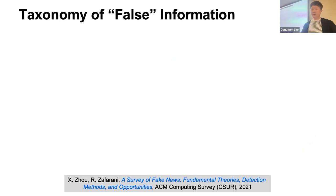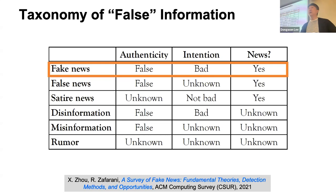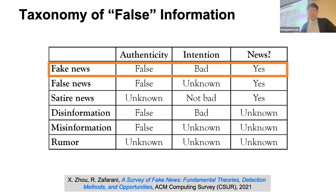Since I used the term fake news in the title, let me clarify, because fake news is such a convoluted term these days. This survey used three dimensions to define it. First dimension is authenticity — whether the information is factually correct or not. Second dimension is intention of the creator — did you have a bad intention, or was the defective news made by mistake? Third dimension is about the format — is it a traditional news format or more like a social media meme type?